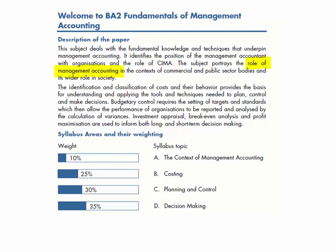We develop that further by starting to identify the key functions of a management accountant. The first of these key functions is costing. Costing involves identifying the cost of producing an item or providing a service, dependent on the nature of the business activities. This is going to be 25% of your syllabus area, and there are a number of different techniques we can adopt. There will be quite a lot of terminology involved in costing.